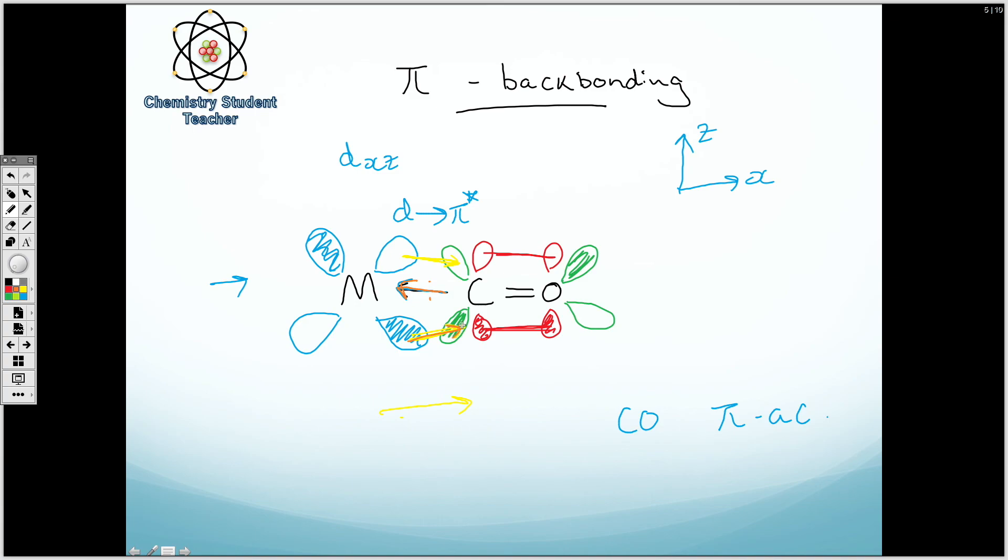And then we've got some lovely pi backbonding coming from one of the d orbitals to the pi antibonding orbital of one of those pi bonds here. I hope that makes sense. I hope it's increased your understanding of the topic.